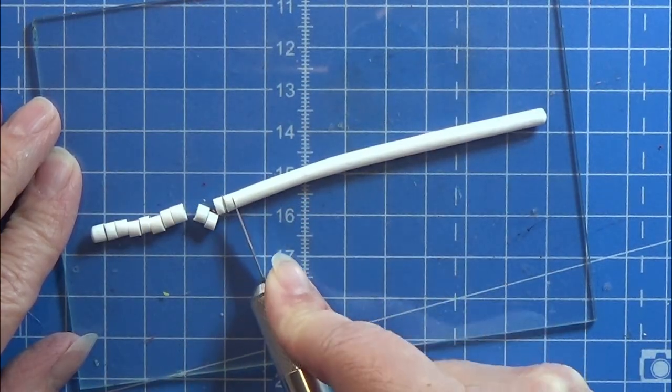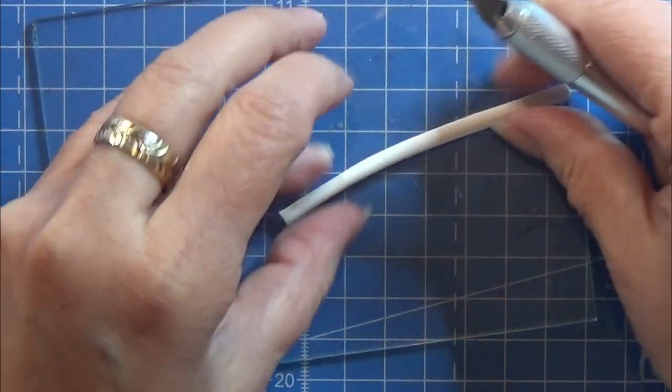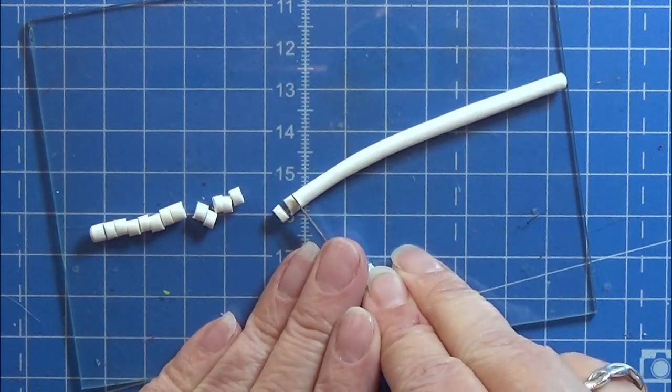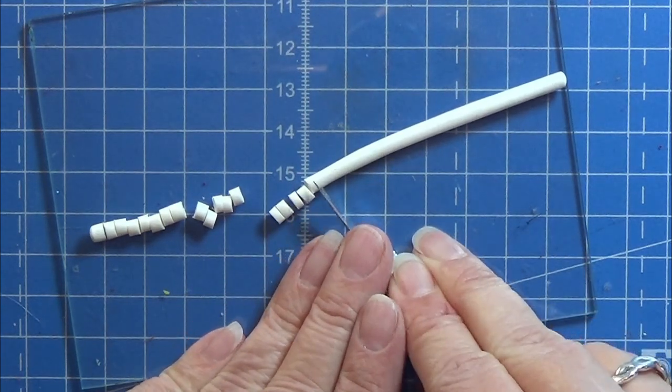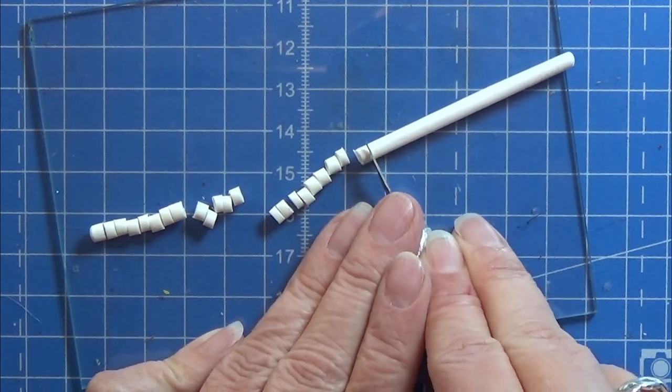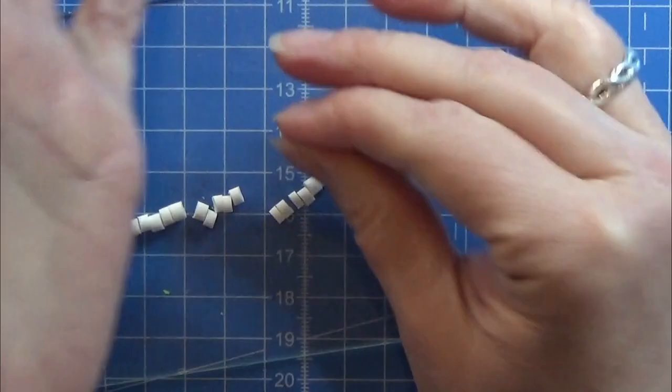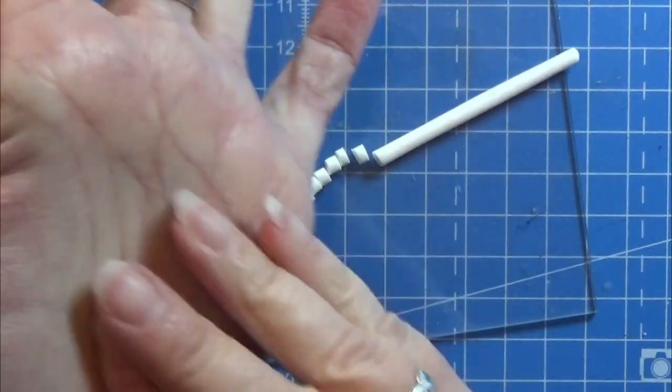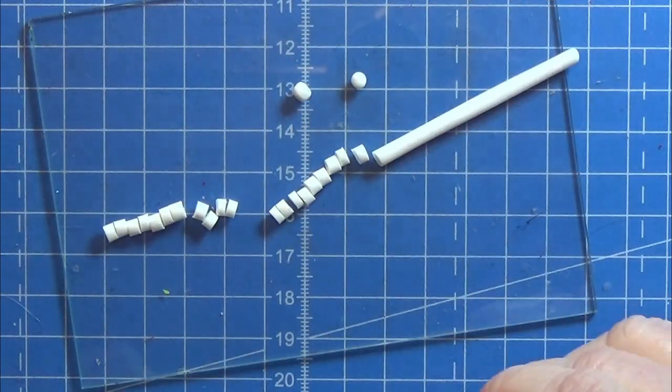Then I rolled out a piece of white clay into a long snake and I cut it up in small equal pieces like here and rolled them into small balls between my hands for the Christmas ornaments that I'm going to put onto the Christmas tree.